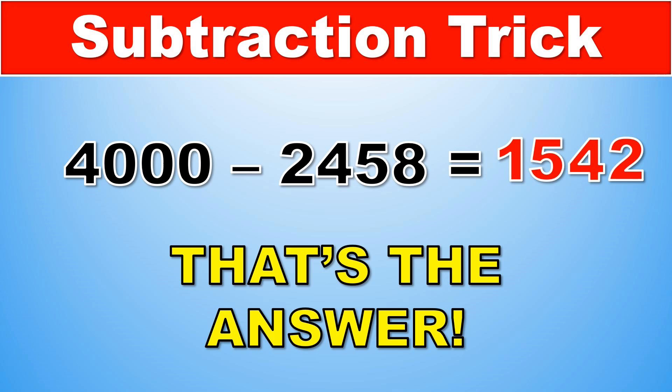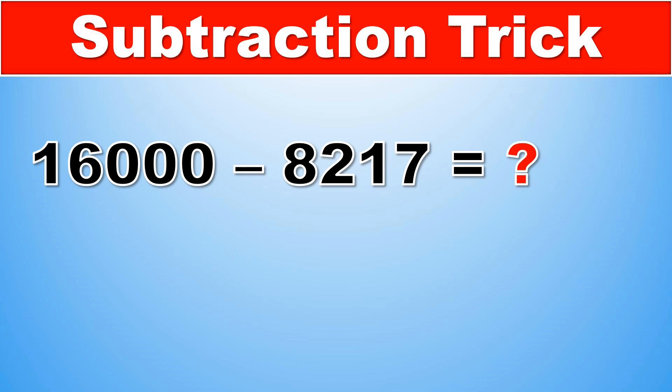Let's take a look at our next problem: 16,000 minus 8,217. Again, the first part of this problem is to split the number 8,217 into two parts. The first part consists of the first digit, 8, and the rest is the 217, which is the second part.